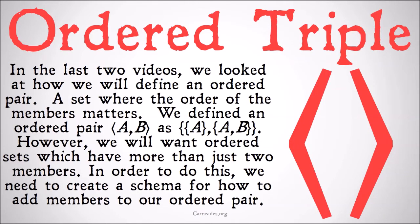In the last two videos we looked at how we define an ordered pair — a set where the order of the members matters. We defined an ordered pair A, B as the class of the class of A and the class of A and B.